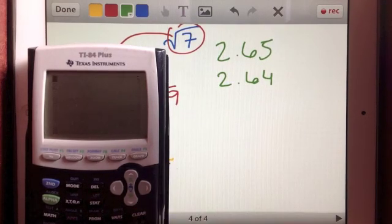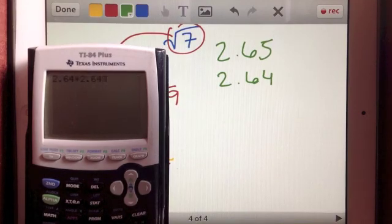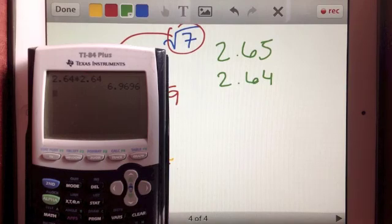So now let's try, I'm going to clear the screen, 2.64 times 2.64. It's raining outside and we're hearing that on our roof up here. So 2.64 times itself gets 6.9696. Okay, we're getting really close.